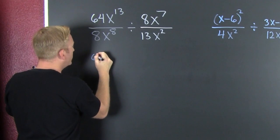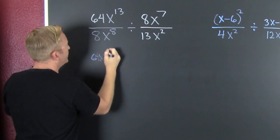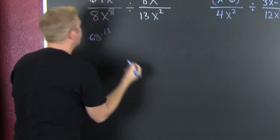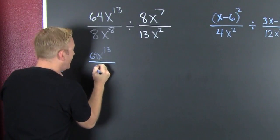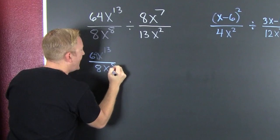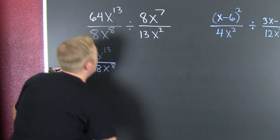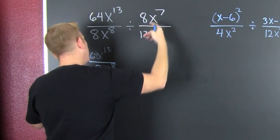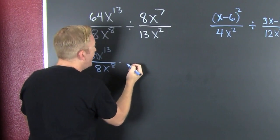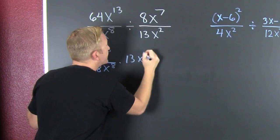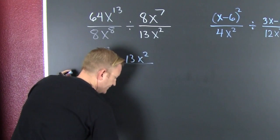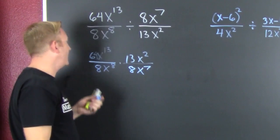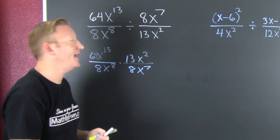That's going to be 64 to the 13, divided by 8x to the 8. Which one do I flip? I flip the one in back. So that's 13x squared divided by 8x to the 7. Factor, flip, and fight.